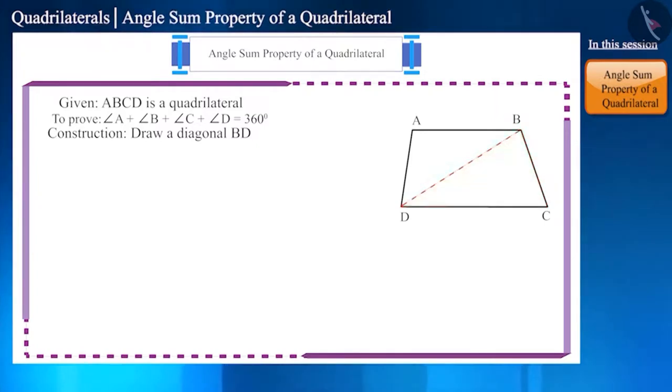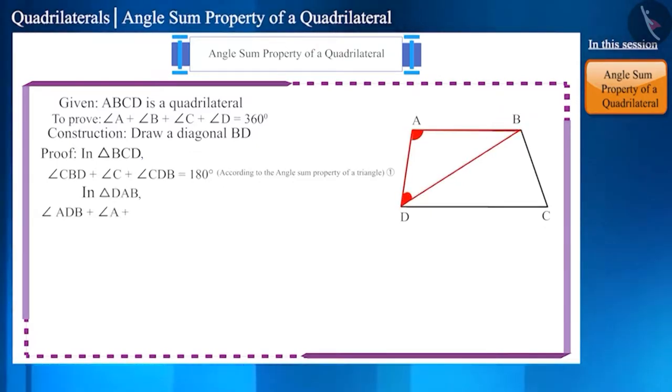In triangle BCD, angle CBD plus angle C plus angle CDB equals 180 degrees according to the angle sum property of a triangle. Similarly, in triangle DAB, angle ADB plus angle A plus angle ABD equals 180 degrees.